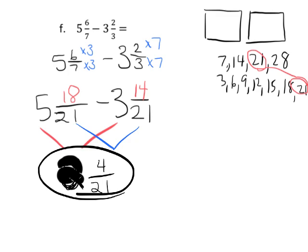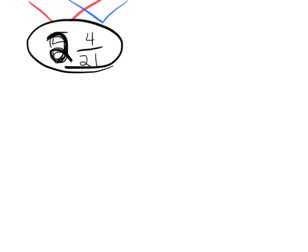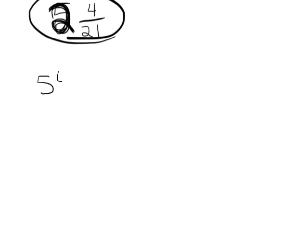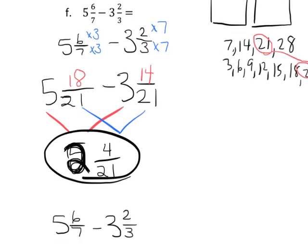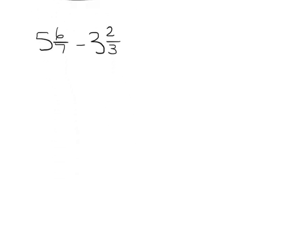Now there's other ways we could have solved this. Another way we could have solved this, 5 and 6 7ths minus 3 and 2 3rds. So another way we could have done this, is we could have started by subtracting the whole numbers.